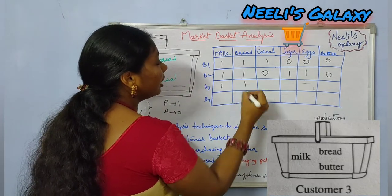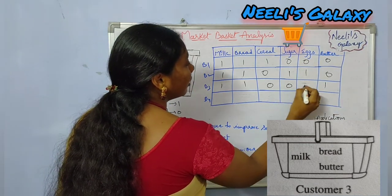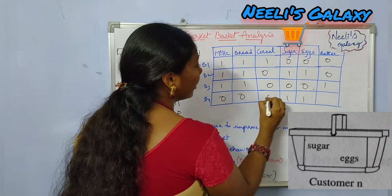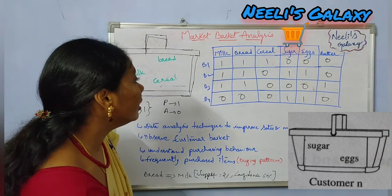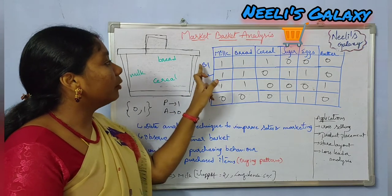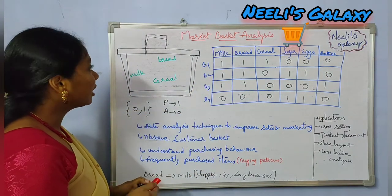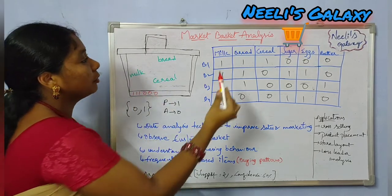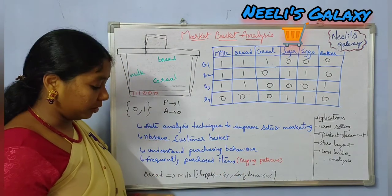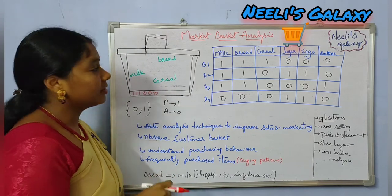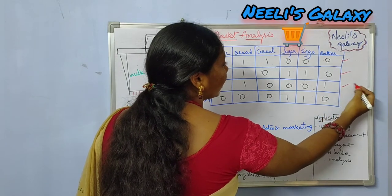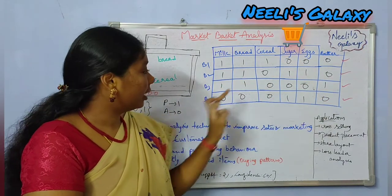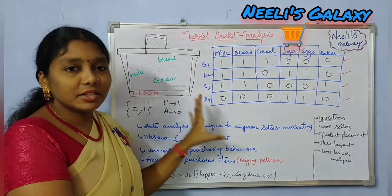Consider the third basket: milk is present, bread is present, and butter is also present — the remaining items are indicated with 0. Consider the fourth basket: sugar and eggs are present — the remaining items are indicated with 0. So here we have four baskets, and for each basket one boolean vector is formed. For basket one, the boolean vector is 1 1 1 0 0 0. Similarly, each basket has its own boolean vector, giving us a set of boolean vectors to analyze.